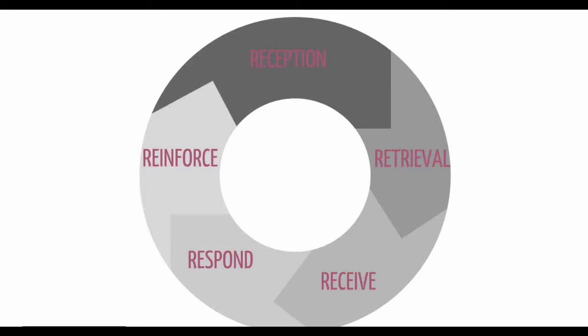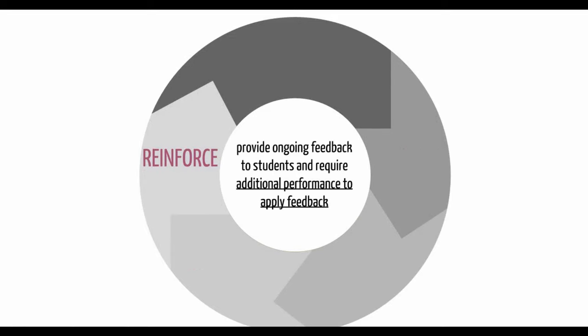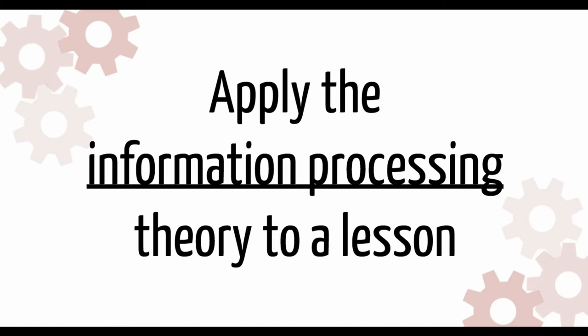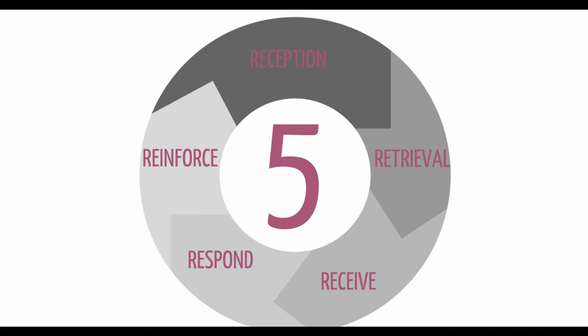The last stage of the model says that students need additional performance opportunities to be able to apply the feedback from their teachers. This brings us back to our key question from the beginning of this lesson: how do we apply the information processing theory to a lesson? To begin, I'd like you to use the five R's for remembering to think of a lesson that you've taught in the past or are very familiar with.